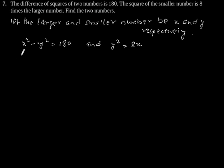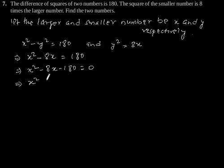This implies x square minus 8x is equal to 180. This implies x square minus 8x minus 180 is equal to 0. Splitting the middle term, we will get x square minus 18x plus 10x minus 180 is equal to 0.